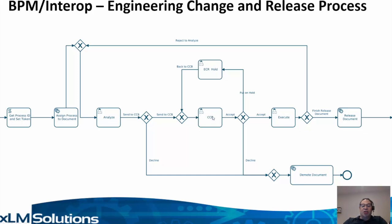It will then go to the CCB node, which is controlled by a group. A user in the group can then take the task, review all the data, and make a decision. They can either put it on hold and have that task wait while additional information is being acquired.